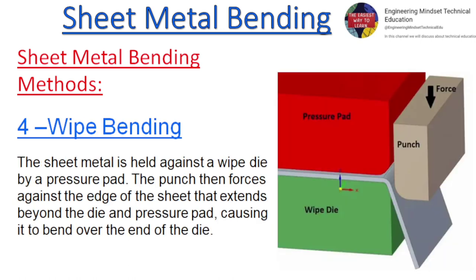Wipe bending: The sheet metal is held against a wipe die by a pressure pad. The punch then forces against the edge of the sheet that extends beyond the die and pressure pad, causing it to bend over the end of the die.